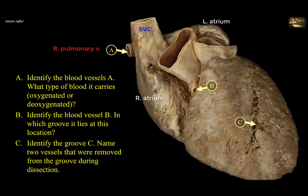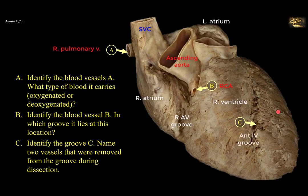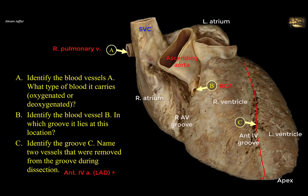As for B, the right atrium is separated from the right ventricle by the right atrioventricular groove, or coronary sulcus. It is called coronary because it lodges the right coronary artery. The stump of the right coronary artery is labeled B, and you can see how it originates from the ascending aorta. Regarding groove C, this is the anterior interventricular groove between the right ventricle and the left ventricle. It contains the anterior interventricular artery — a branch of the left coronary artery, also called left anterior descending — and the great cardiac vein, which continues around the left border to form the coronary sinus.